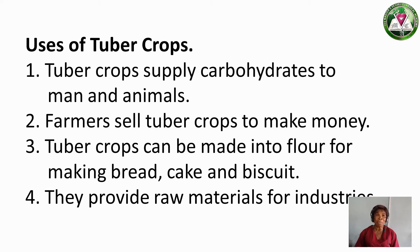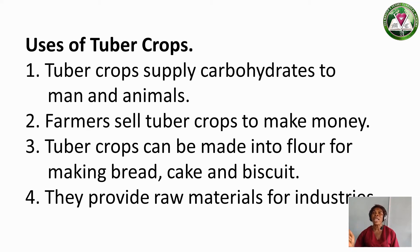Number 2: farmers sell tuber crops to make money. When they take what they produce from their farm to the market, they sell it and get money, which they use in paying your school fees, buying food, and clothing you. Number 3: tuber crops can be made into flour for making bread, cake, and biscuits.